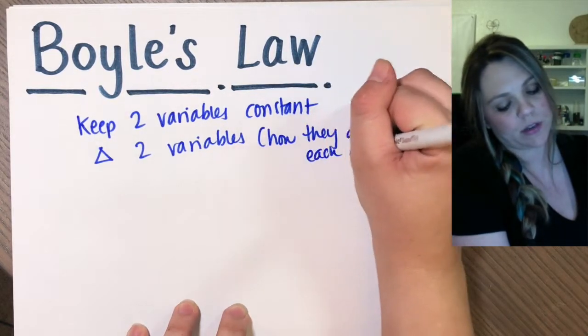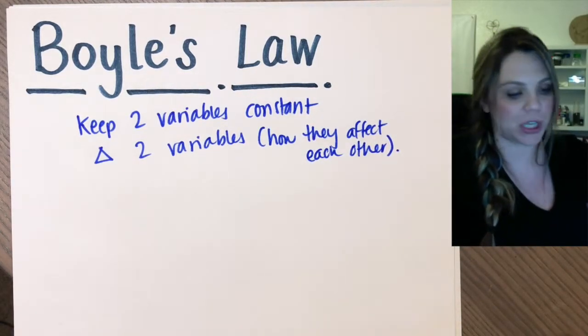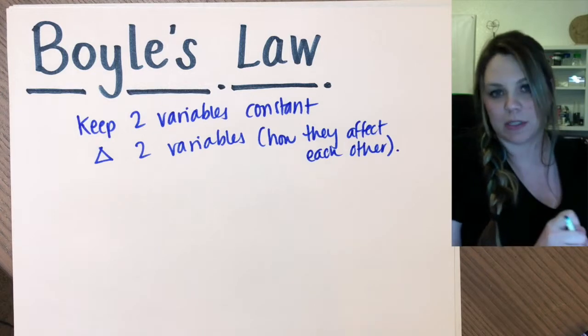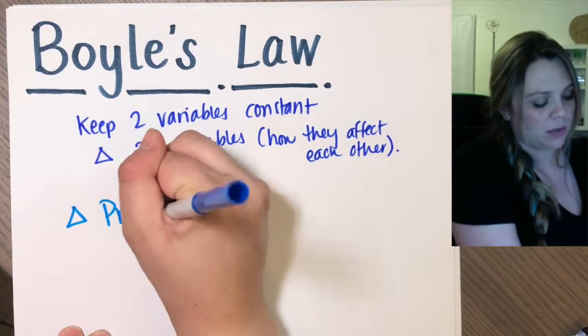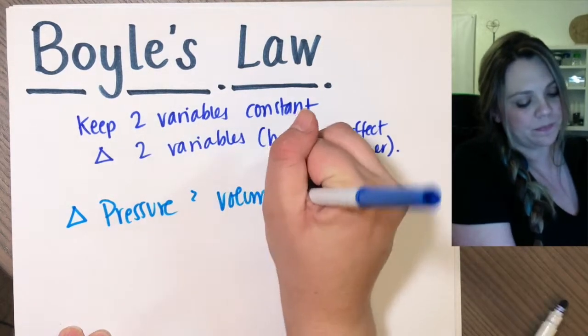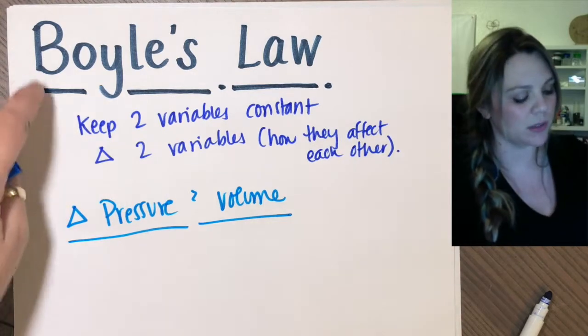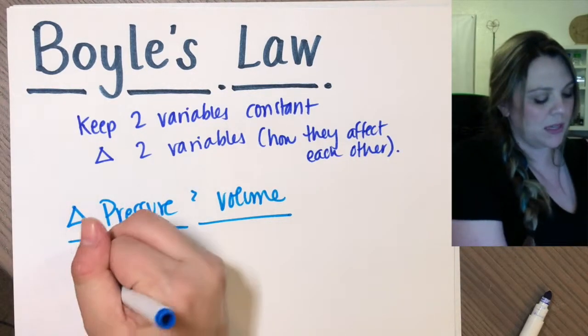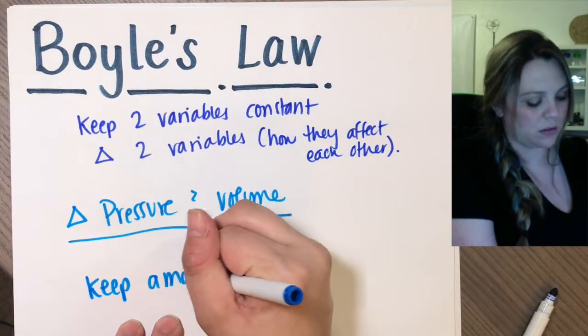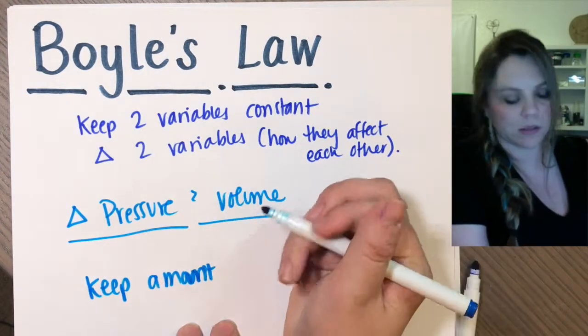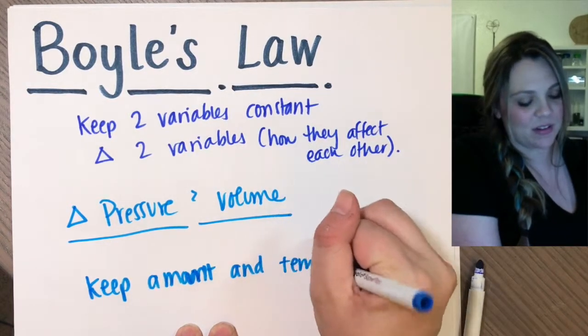So the two variables I am changing, I'm going to be dealing with pressure. So I'm going to change pressure and volume. These are the two variables that I'm actually dealing with in Boyle's Law. I'm going to keep the amount, spelling is important, and temp constant.